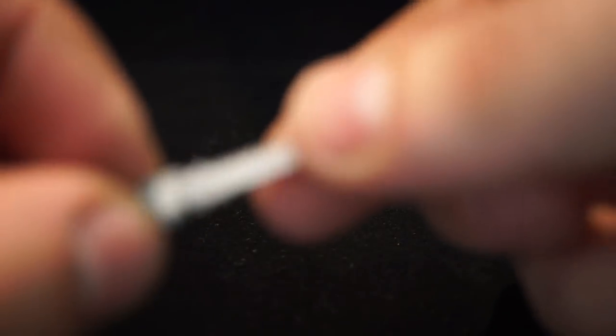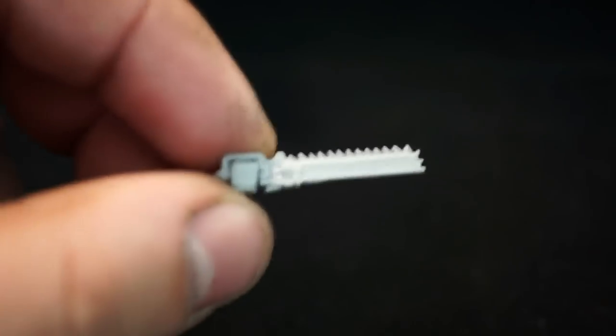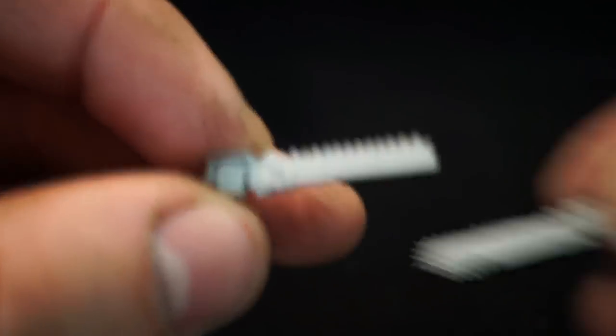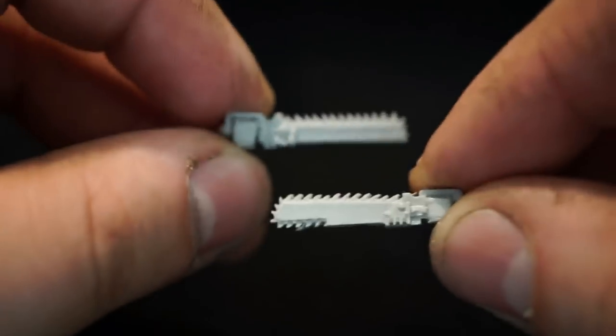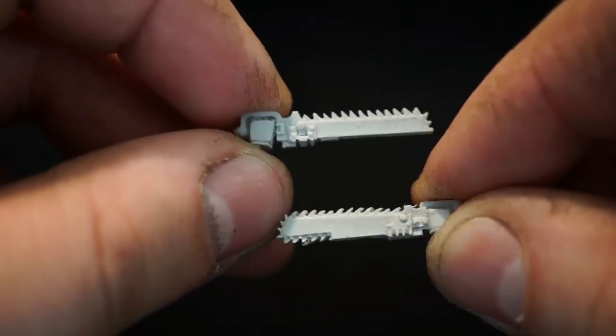Next up we'll look at the chain swords. So I have two examples here of chain swords from Forge World. A despoiler chain sword for Mark IV and another one for Mark II. Very nice.